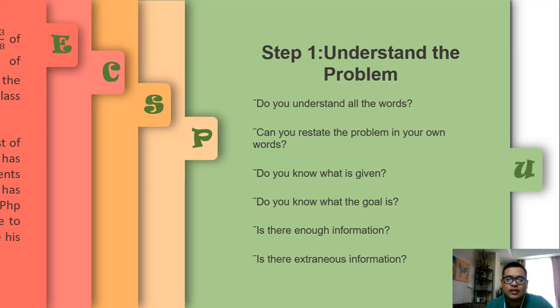Is there enough information? Are the givens enough to solve the problem? Or are there extraneous information? Extraneous information means information which you do not need, but there are only distractors in the problem. So that's the first step in Polya's problem-solving.